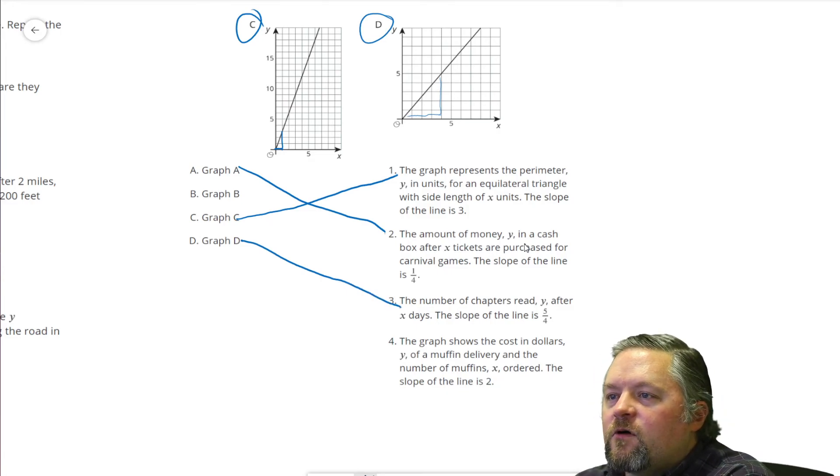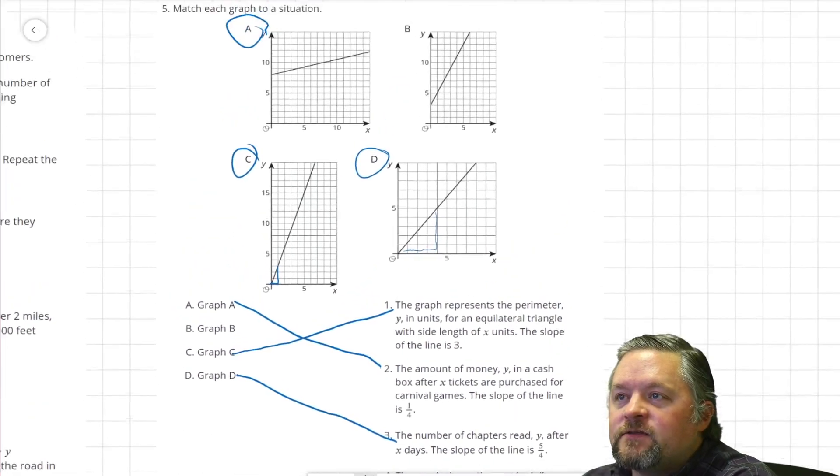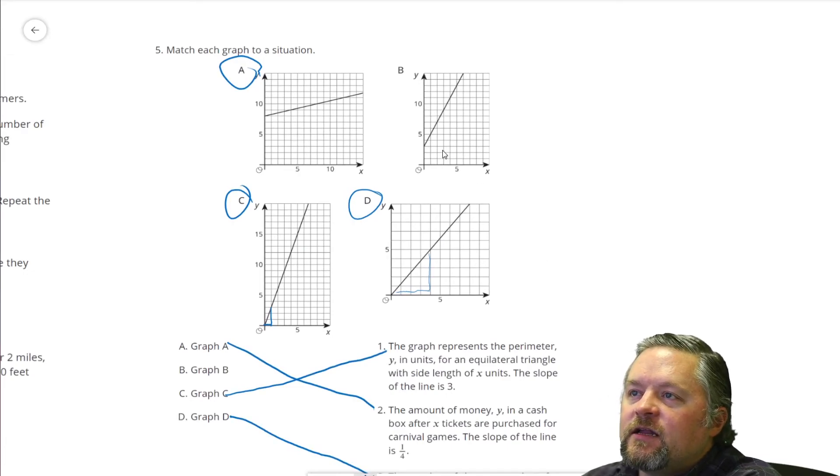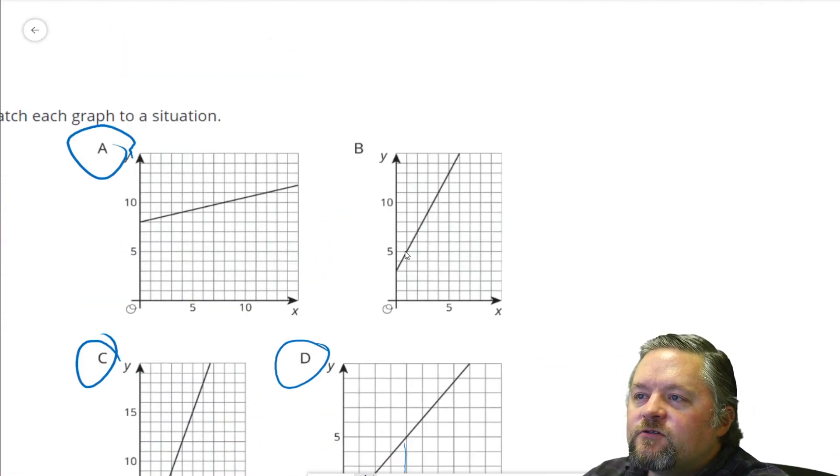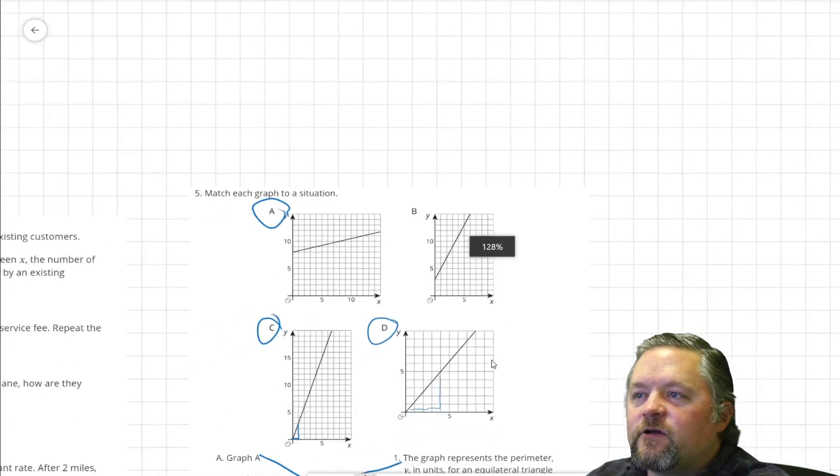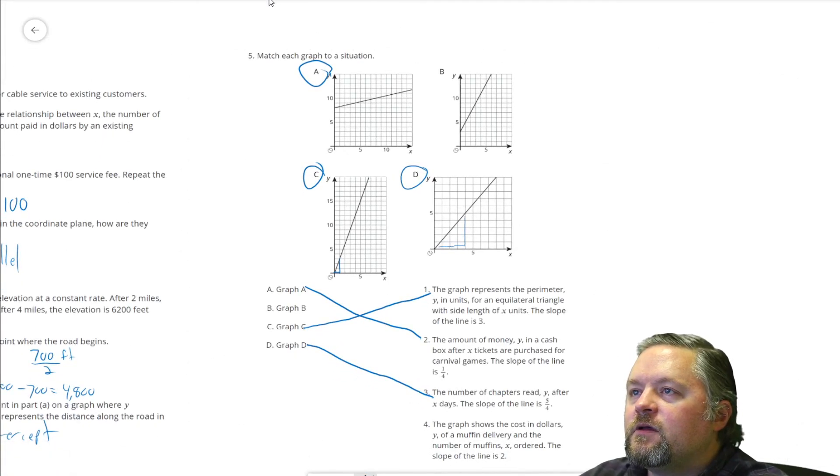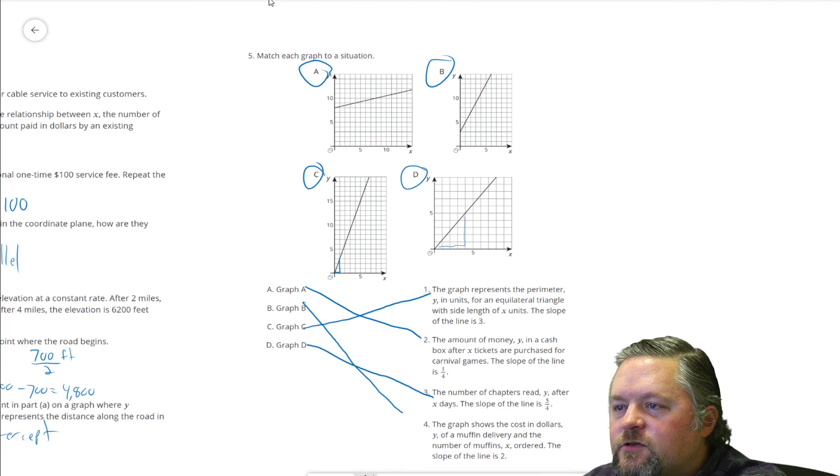Okay, number 4. Graph shows the cost in dollars, Y, of a muffin delivery and the number of muffins ordered. The slope of the line is 2. So, we need a slope of 2. And this shows the cost of the muffin delivery and the muffins. So, we need a Y intercept and a slope of 2. So, B, that goes up 2 over 1, up 2 over 1, up 2 over 1. And it looks like they pay $3 for delivery. So, B, graph B, goes with number 4.